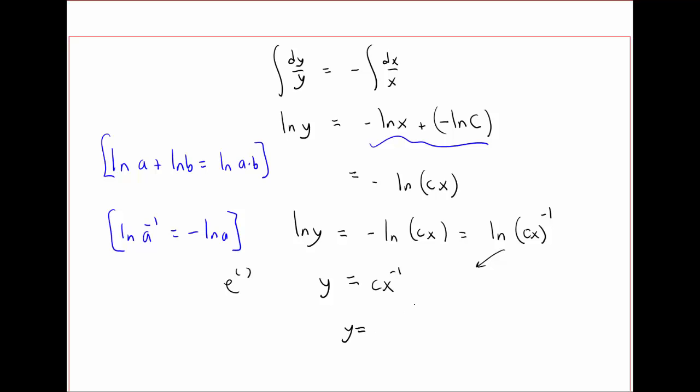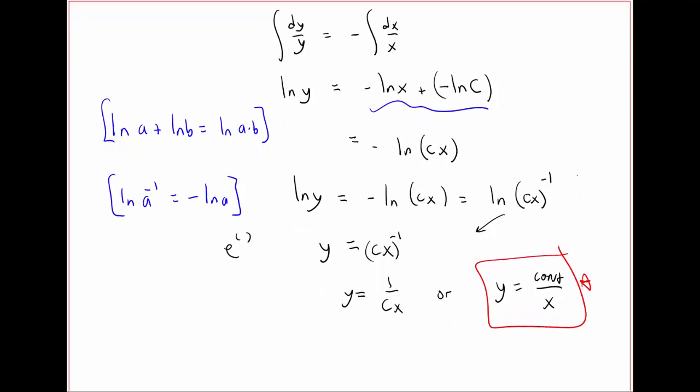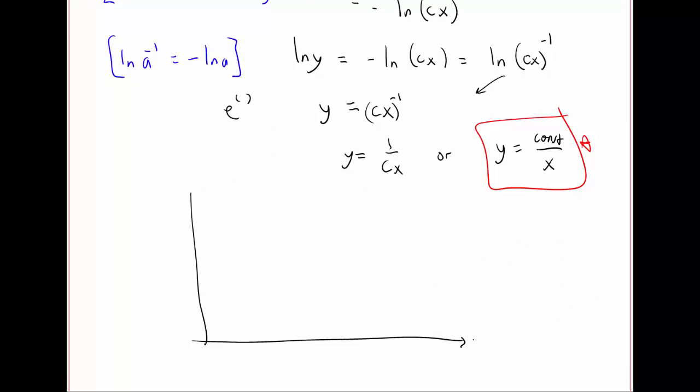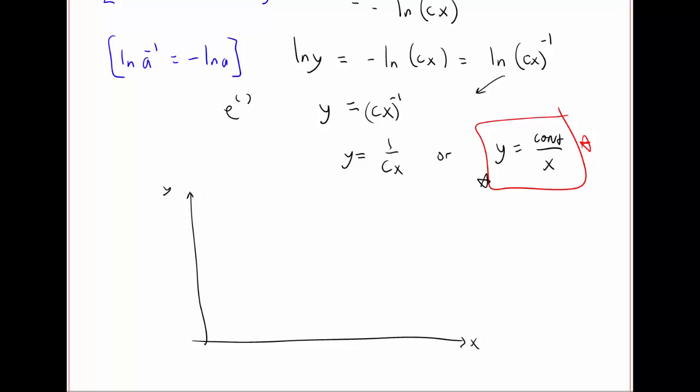Or y equals 1 over cx. Or y equals some other constant over x. That's our solution for the streamline. We can pick various constants for this equation.